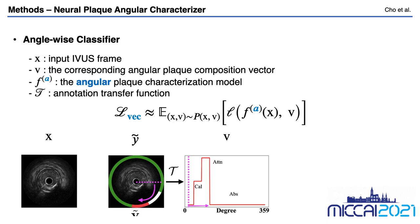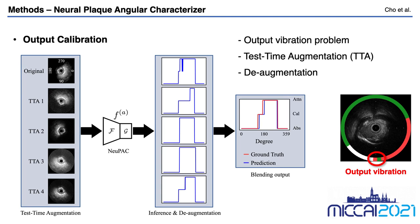Although plaque composition of adjacent angles or frames are strongly correlated in actual vessels, each element of NeuPAC's output is independent. Due to this nature, output vibration — a prediction error where the prediction repeatedly changes along multiple adjacent angles — sometimes occurs. This phenomenon is problematic for predicting clinical parameters during PCI. To calibrate the output vibration, we apply test-time augmentation.